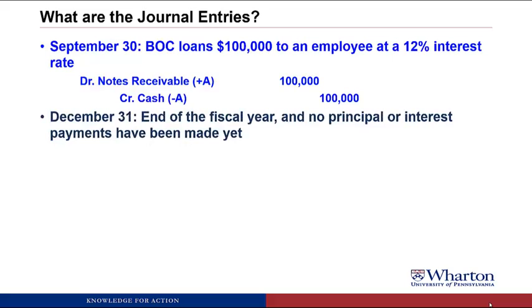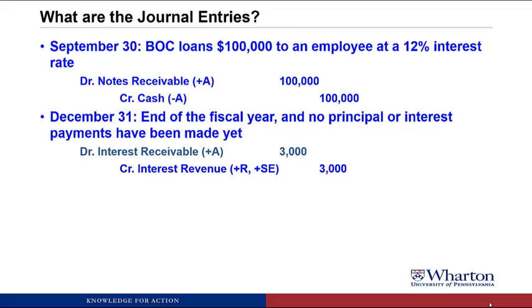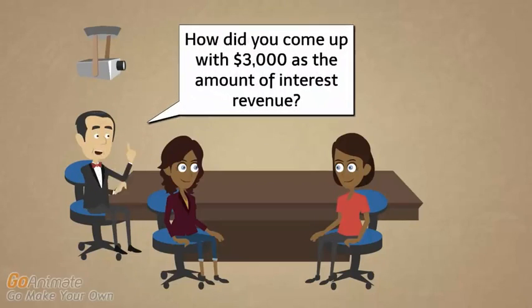December 31st — it's the end of the fiscal year and no principal or interest payments have yet been made. We do need an adjusting entry because three months has gone by and we've earned interest revenue. We've earned it because we provided the service of having money outstanding to the employee, and we have a contract to get paid, so it meets both the earned and realized criteria. We credit interest revenue for $3,000 and debit interest receivable — not notes receivable, which is only for principal, and not accounts receivable, which is only for customers.